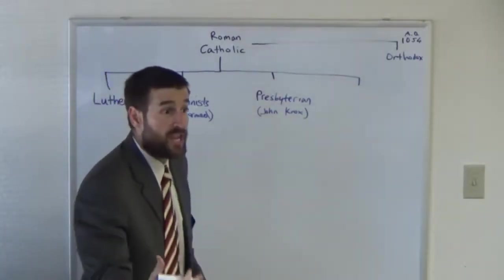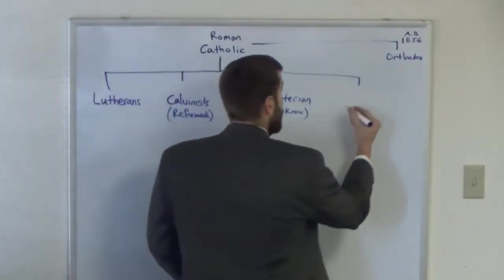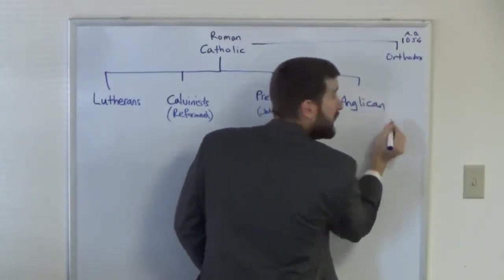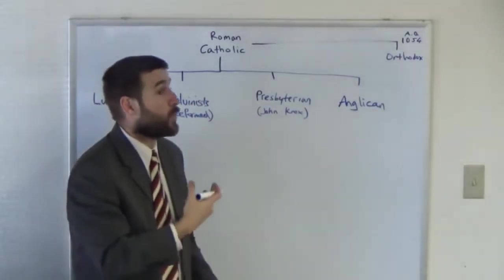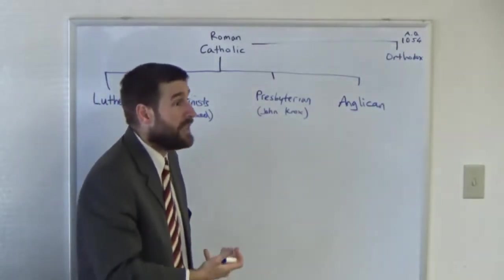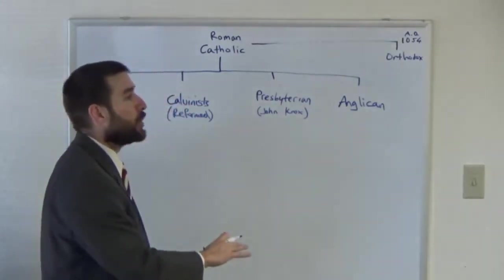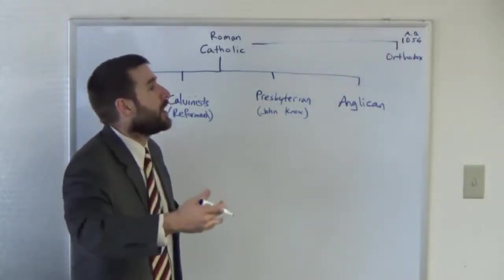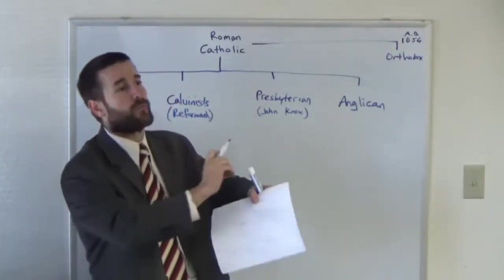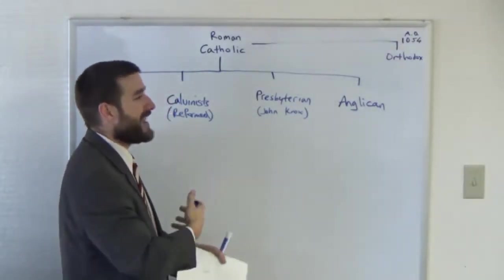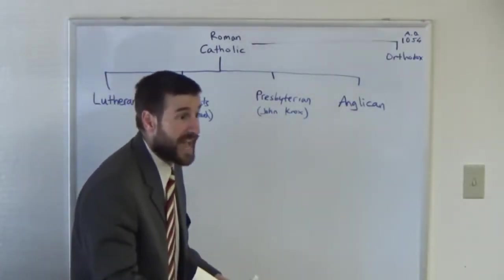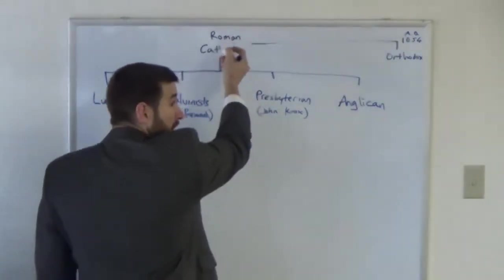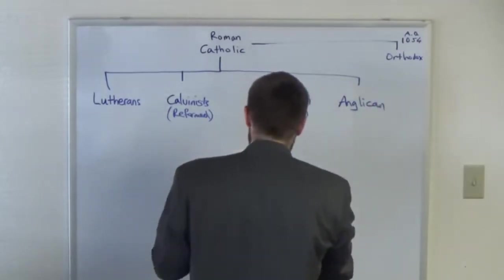Then you have another group during this Protestant Reformation of the 1500s known as the Church of England, or we'll just call them Anglican. The Church of England was started by Henry VIII. Henry VIII wanted to divorce his wife, the Pope would not grant him that divorce, so he broke up. In the real early days of the Church of England their doctrines were pretty much identical to the Roman Catholics. But throughout the course of the 1500s, a lot of people within the Church of England started pulling them further away from the Catholic Church. But they never got all the way away from it. They still hung on to some of the doctrines of mama up here.